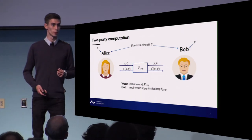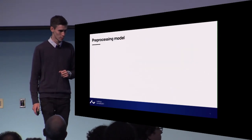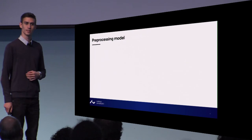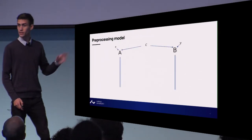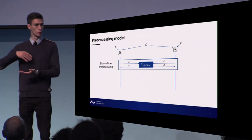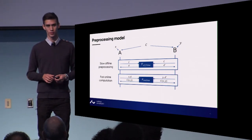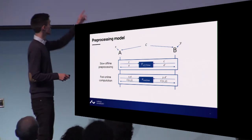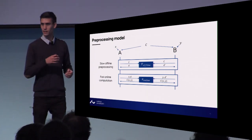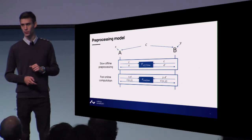The problem with many existing protocols is that they are too slow. To the rescue, we have the preprocessing model — also known as correlated randomness. The main idea is that the parties run some slow offline preprocessing protocol where we push all the public key primitives, and then later we can do a super fast online computation using this preprocessing material D and D prime.